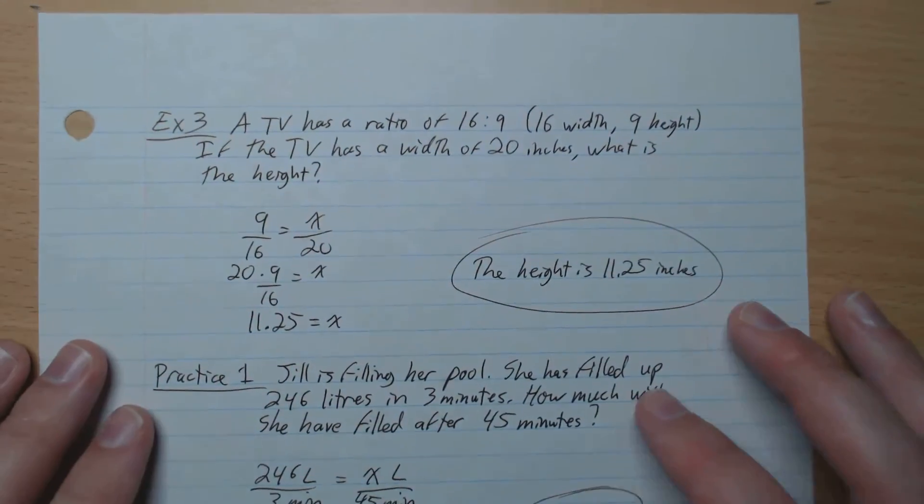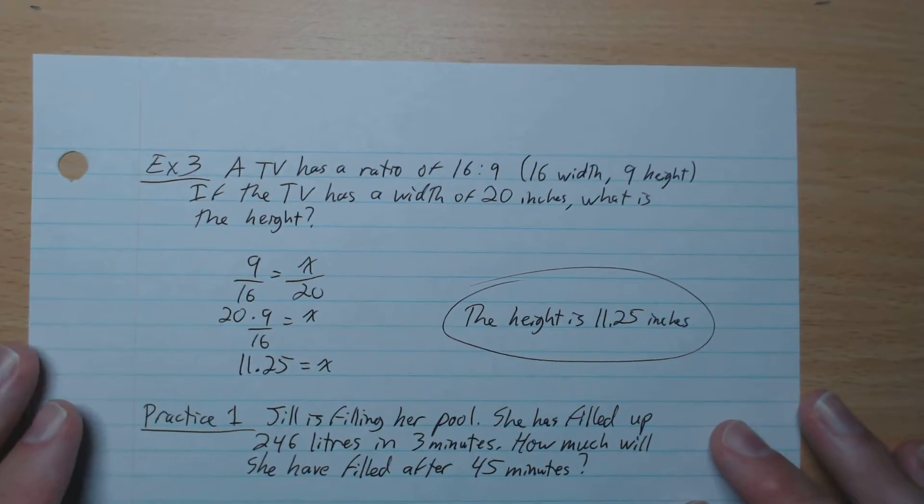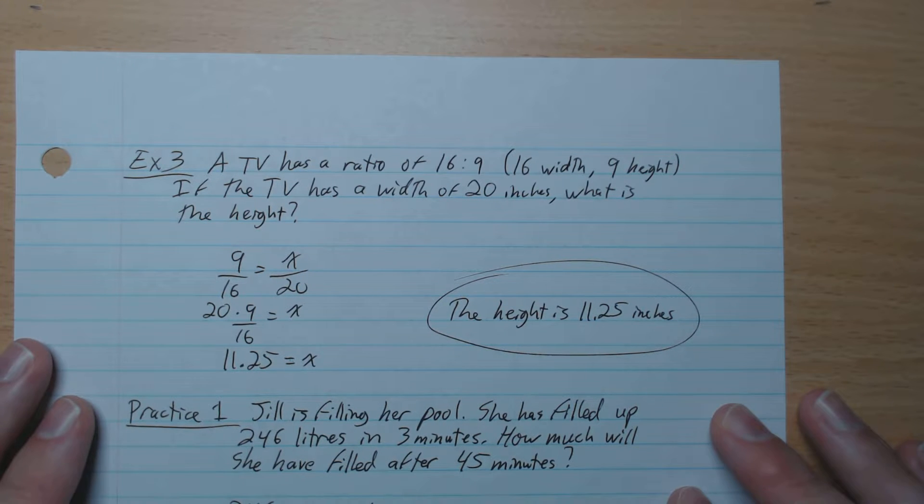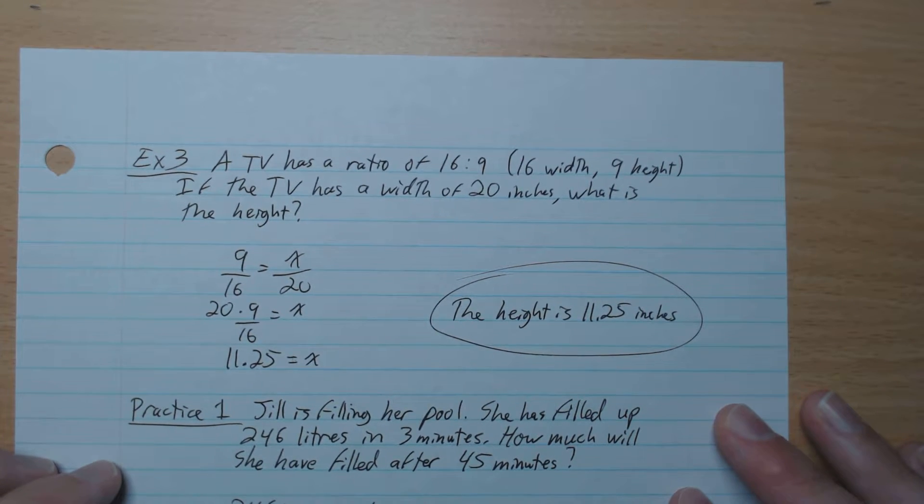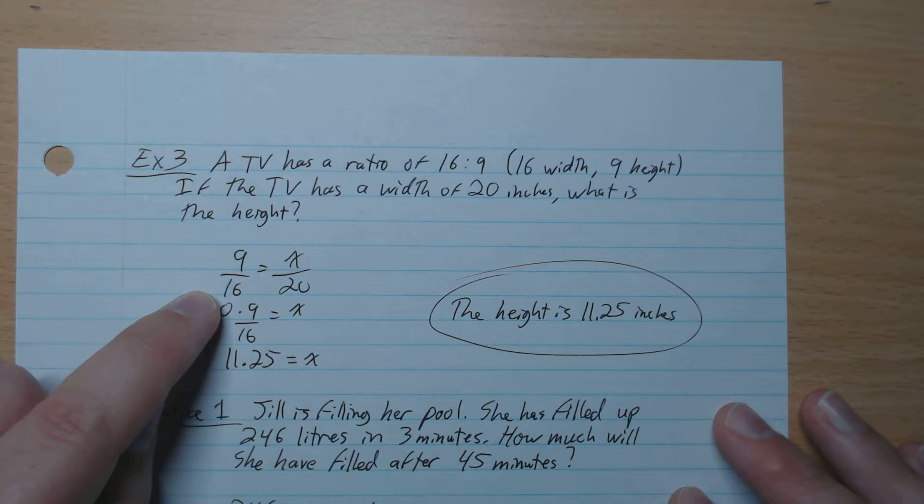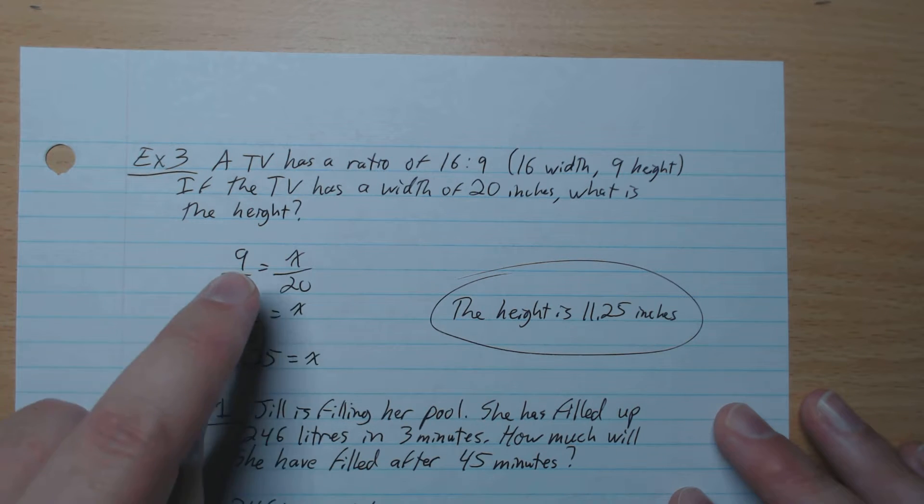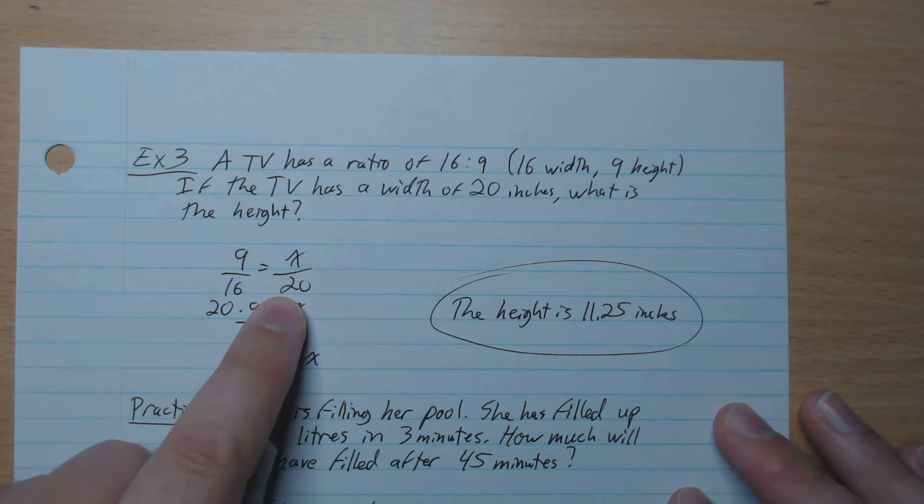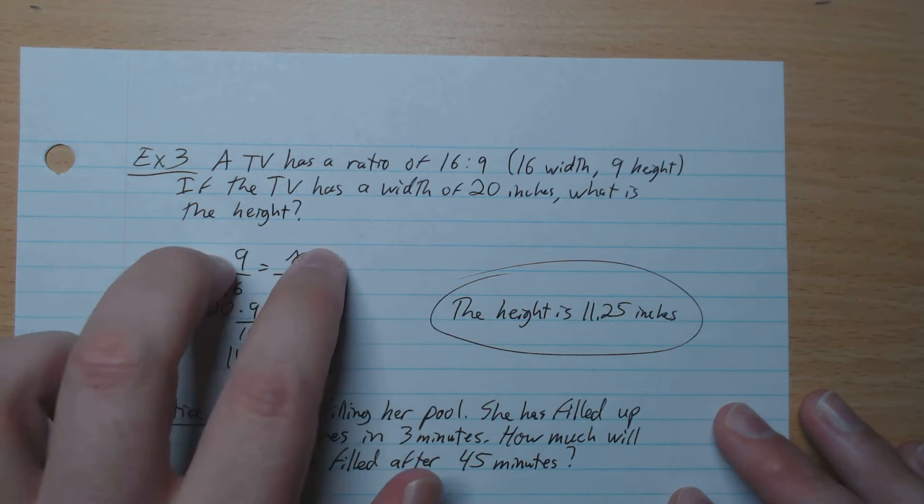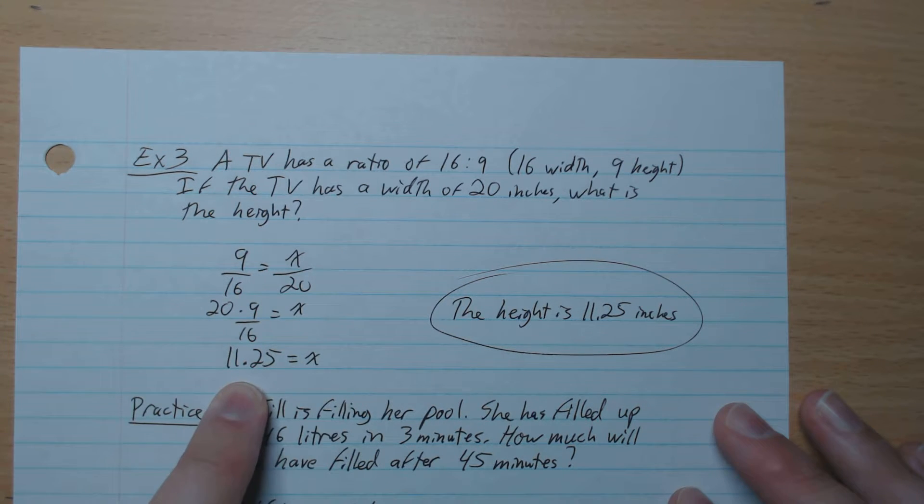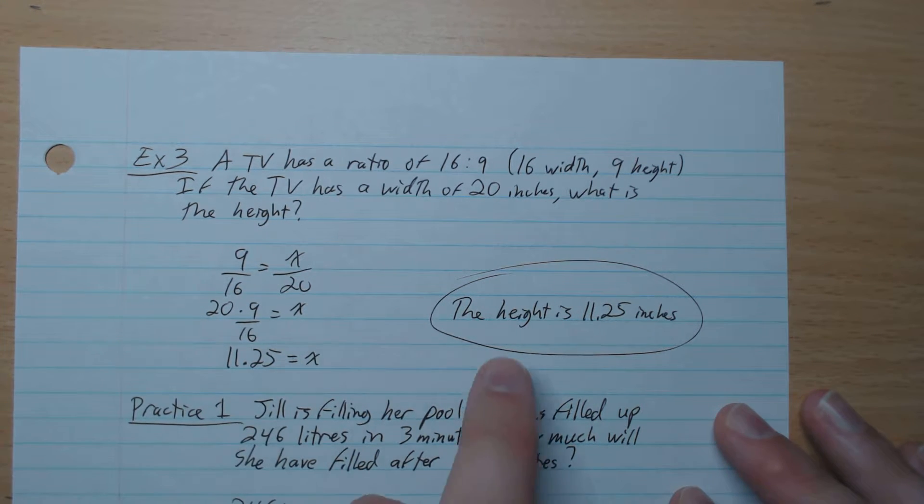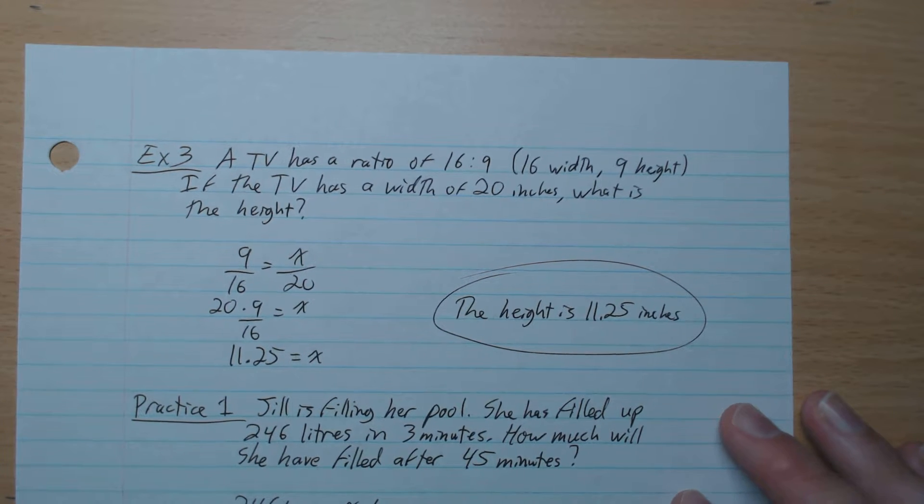Example three: A TV has a ratio of 16 by 9, so 16 width by 9 height. If the TV has a width of 20 inches, what is the height? We're going to go 9 over 16, and unknown is x, which is the height, over 20, which is the width. We go times 20 to both sides, and we get x equals 11.25. The height is 11.25 inches.